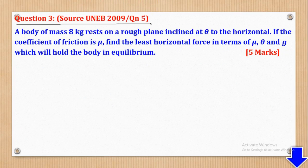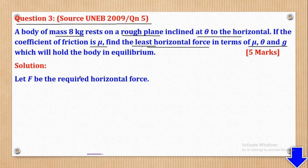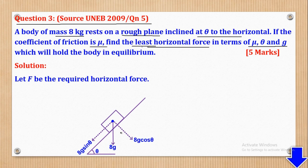Now we shall go to question 3, which came from UNEB 2009, question 5. When they talk about the least force, it means the particle is just at the point of sliding downwards. Let F be the required horizontal force. We shall draw our particle on an incline of theta degrees. The mass was 8 kilograms, so the weight will be 8G. The normal reaction will be capital R and the horizontal force is capital F.